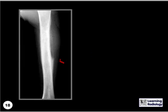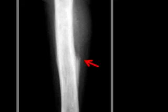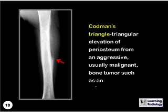What sign is being demonstrated here? This is a Codman's triangle, which is that triangular elevation of periosteum from an aggressive, usually malignant, bone tumor, such as an osteosarcoma.